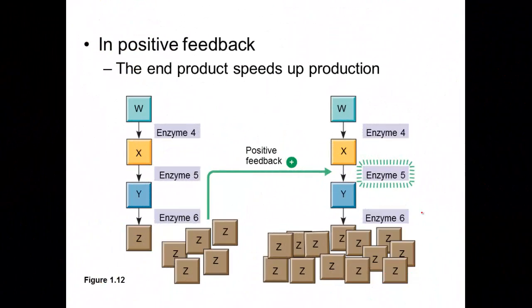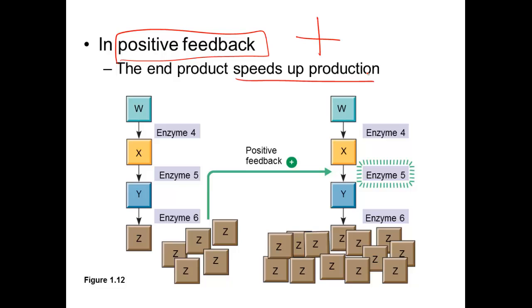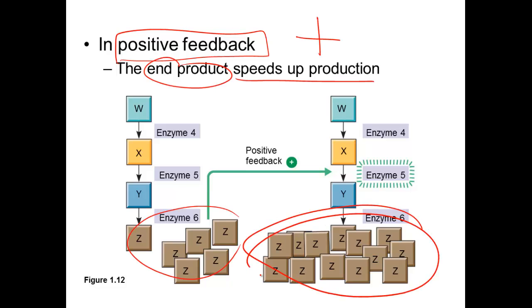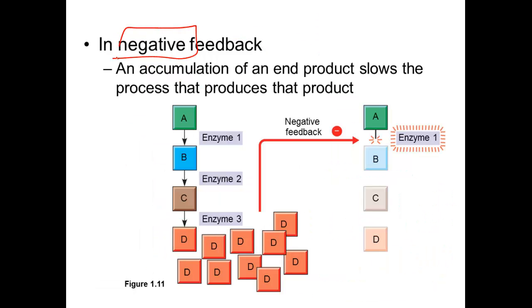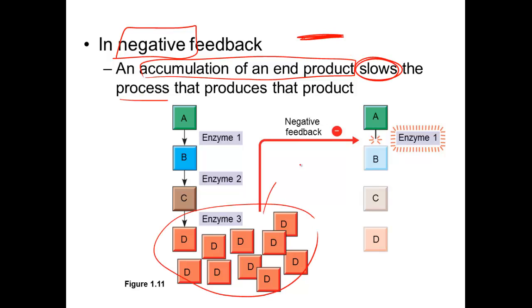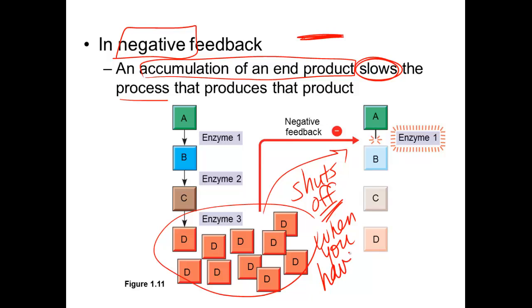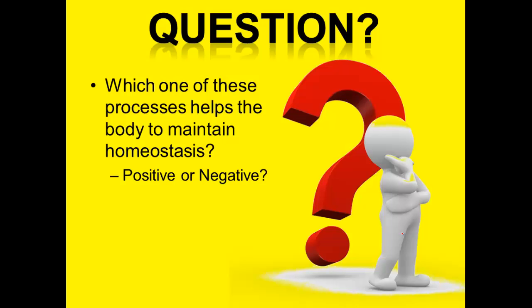To clarify: in a positive feedback loop, the end product speeds up the production of another feedback loop, so you start with some product and get many, many products. In a negative feedback loop, however, an accumulation of the end product will slow the process of that product being made. Once there's enough of that enzyme or product, the system shuts it down — we've got enough, so let's stop this process. The end product actually shuts the process down.